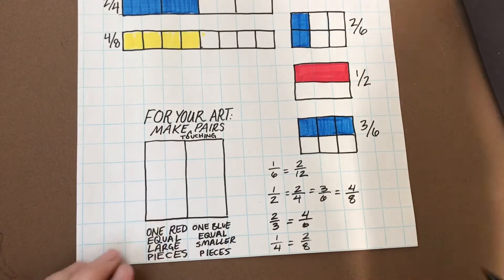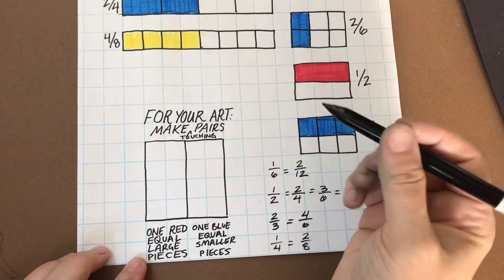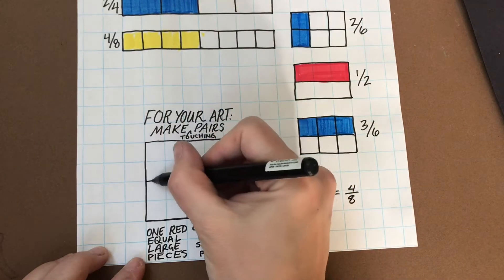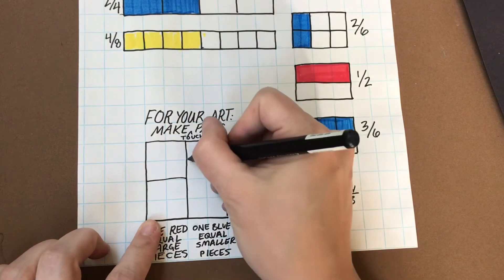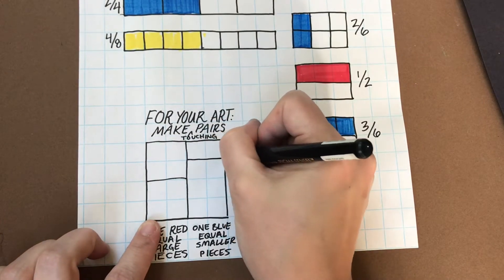For your Mondrian art, I challenge you to use at least three equivalent fractions for your art. That means you'll have three pairs of boxes or rectangles that are right beside each other.